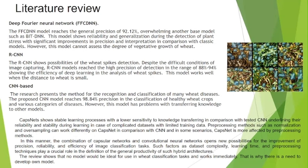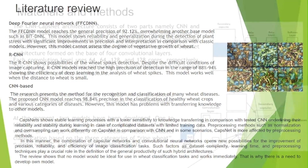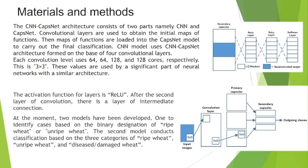That is why there is a need to develop our own model. The CNN-CapsNet architecture consists of two parts, namely CNN and CapsNet. Convolutional layers are used to obtain the initial feature map. The CNN model uses a CNN-CapsNet architecture based on four convolutional layers. The activation function for the layers is ReLU.